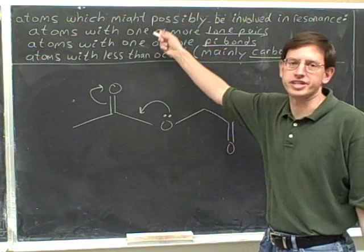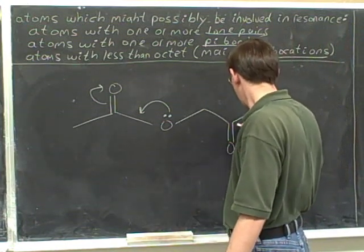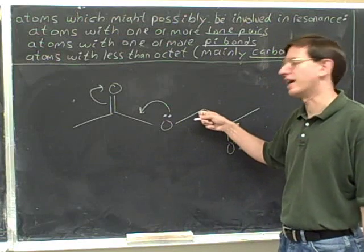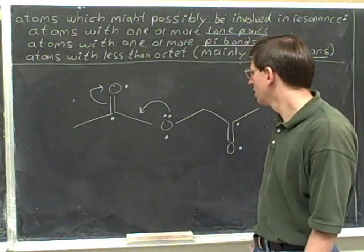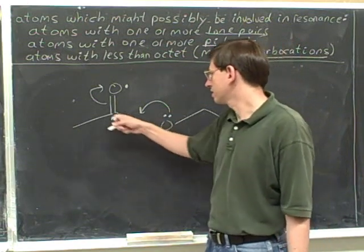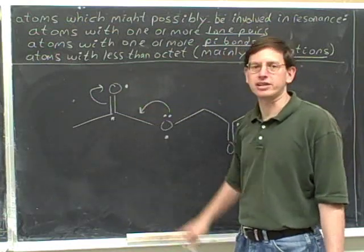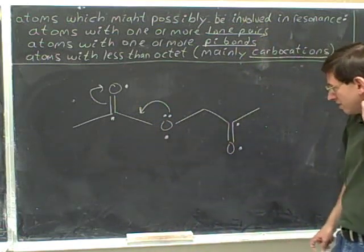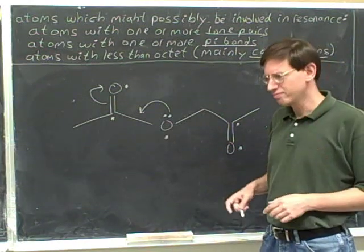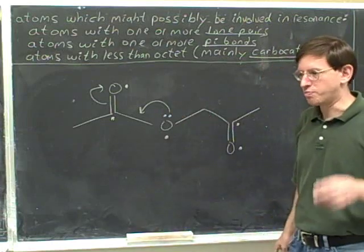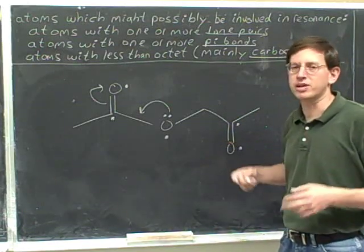Do these arrows seem legal based on what we've learned? Start by drawing the dots. These two atoms can participate in resonance; this one cannot. This atom has a lone pair so it can participate; these two atoms have pi bonds so they can participate; this one cannot. The atoms involved in the arrows are this oxygen, this carbon, and this oxygen — and they all have dots. So these seem like legal electron-pushing arrows. Notice it's not necessary to involve all the candidates for resonance. What's important is that none of the atoms involved are non-candidates.